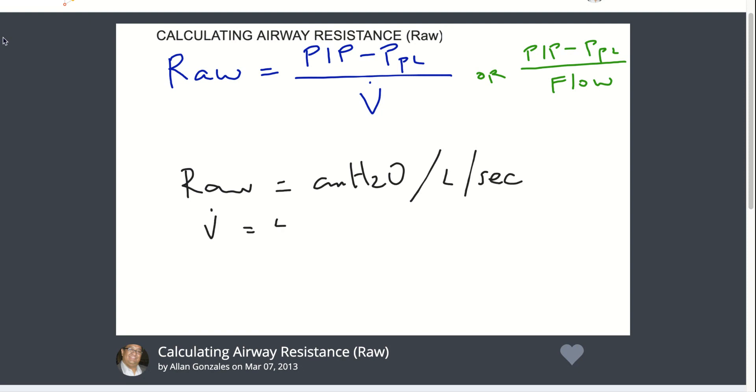Now, flow is in liters per minute. In order to convert that to liters per second, you would need to divide that into 60 seconds.